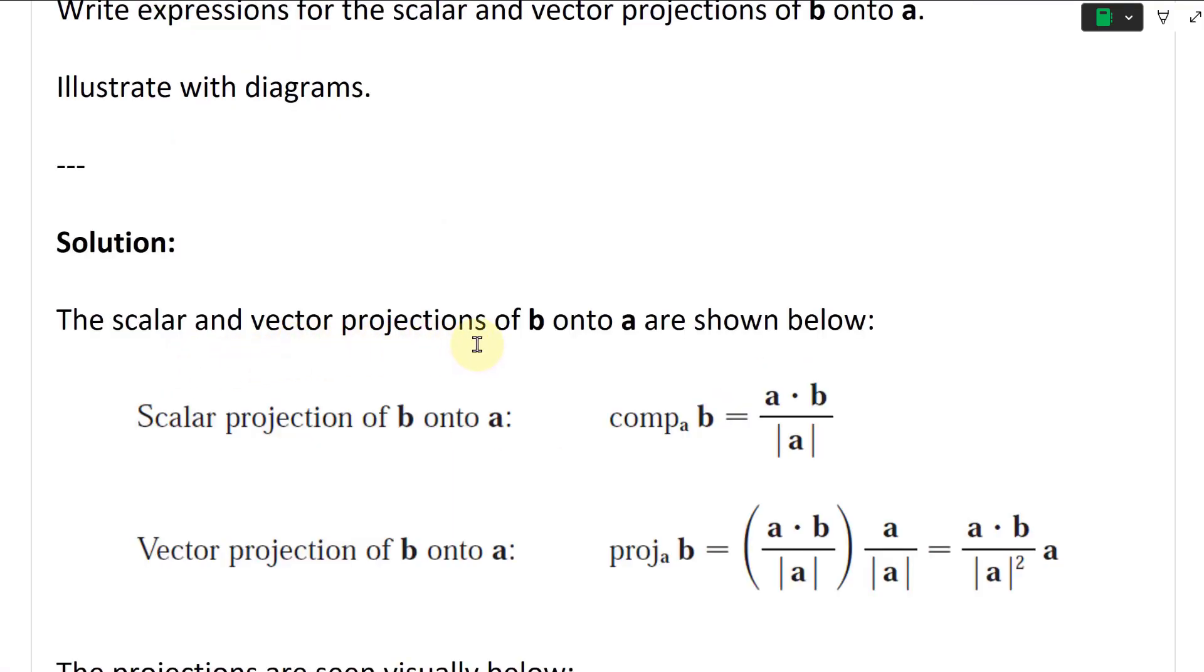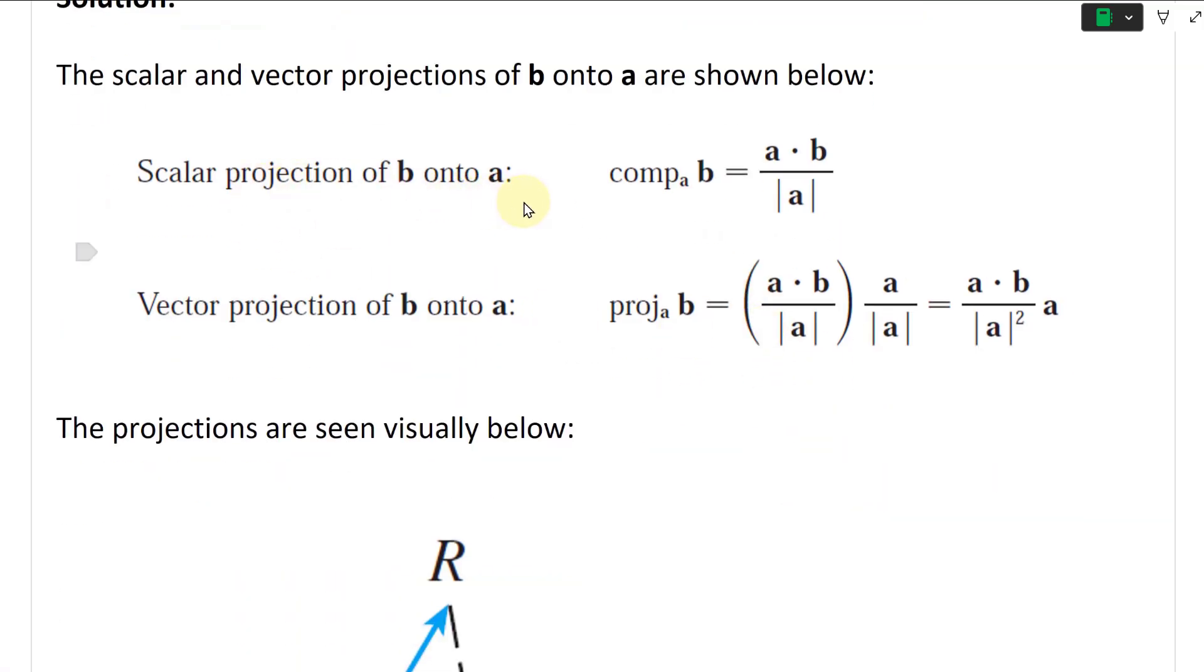The scalar and vector projections of B onto A are shown below. Here's the scalar projection of B onto A.